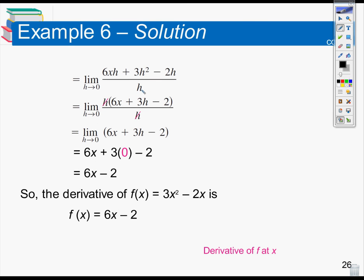If I were to evaluate the limit as h approaches 0 now, I would get 0 over 0, which is indeterminate — can't do it. So I factor an h out of the top and cancel it with the bottom. Now all I have to worry about is the limit of 6x plus 3h minus 2 as h approaches 0. Not every piece has an h value, so when I put in 0, it just zeros out the 3h term. What I'm left with is 6x minus 2. So the derivative of f of x equals 3x squared minus 2x is f prime of x equals 6x minus 2.